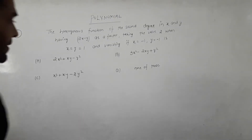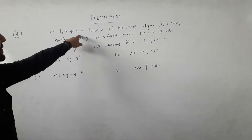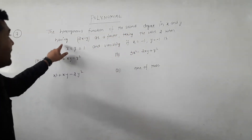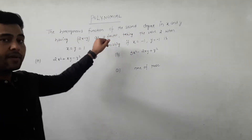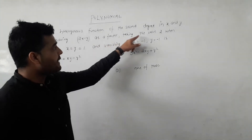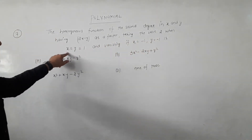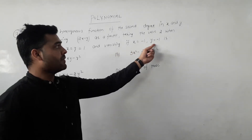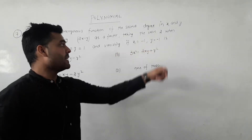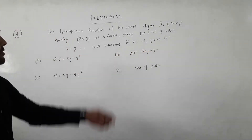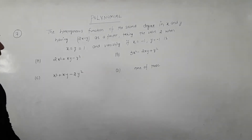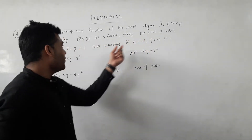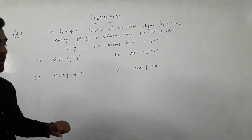Next question 7: find the homogeneous function of the second degree in x and y, having 2x minus y as a factor, taking the value 2 when x equal to y equal to 1, and the condition if x equal to minus 1, y equal to minus 1. This is a homogeneous function of second degree.